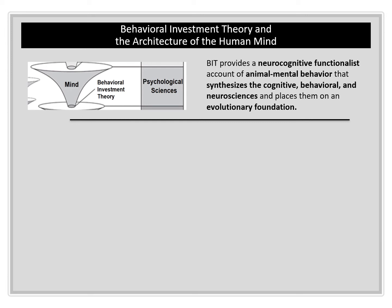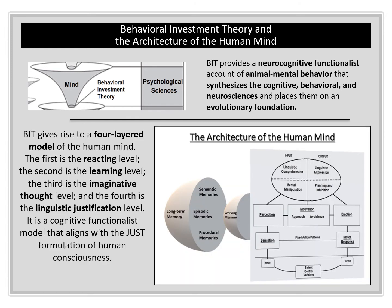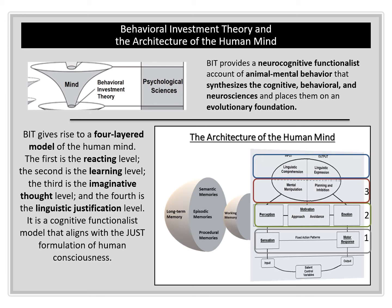BIT provides a neurocognitive functionalist account of the human mind as consisting of four different layers or levels of processing. The first mind layer is automatic, reflex-like, and reactive, based on stimuli and triggers. The second layer is much more fluid, motivationally based, and shaped by consequential learning. The third layer is imaginative and involves simulating outcomes and making predictions, based on and regulating responses across time. The final layer is the layer of linguistic justification.